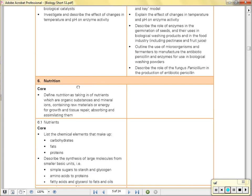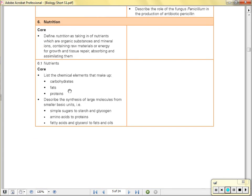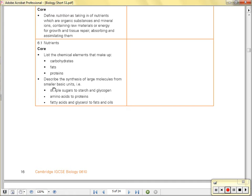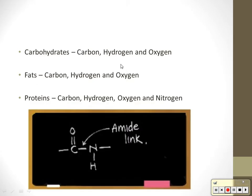On to nutrition. Nutrition is the taking in of nutrients for growth, repair, et cetera. Your three basic nutrients are carbohydrates, fats, and proteins. The syllabus wants you to know the elements that make them up. Carbohydrates contain carbon, hydrogen, and oxygen. Fats also contain carbon, hydrogen, and oxygen. Proteins contain the same three plus nitrogen — that nitrogen creates an amide link, which is why proteins are made from amino acids.